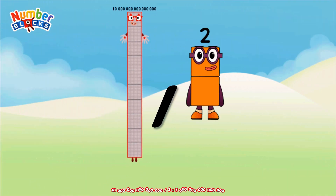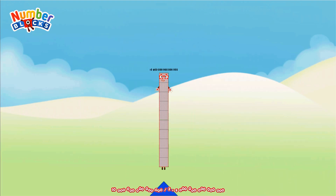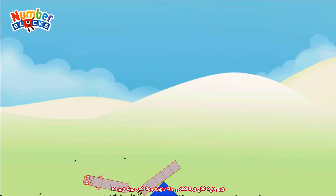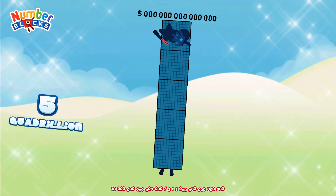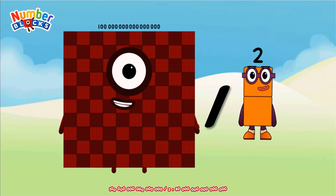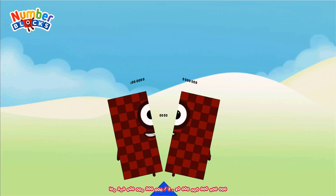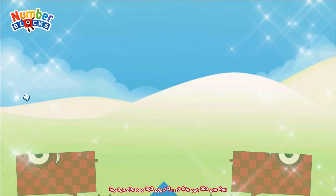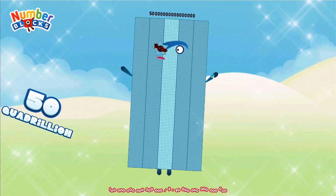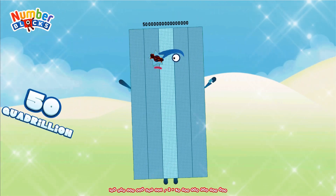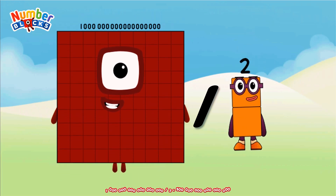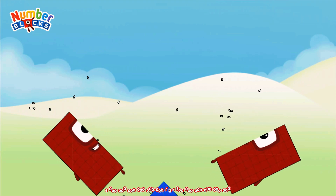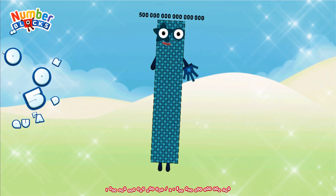Ten quadrillion divided by two equals five quadrillion. One hundred quadrillion divided by two equals five hundred quadrillion.